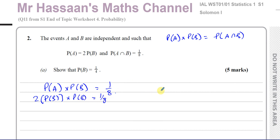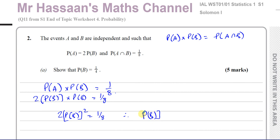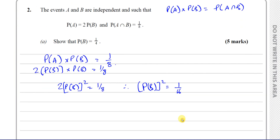Multiplying these together, we get 2 times P(B) squared equals 1/8. Therefore, P(B) squared equals 1/16 after dividing both sides by 2. And therefore the probability of B equals the square root of 1/16, which is 1/4.